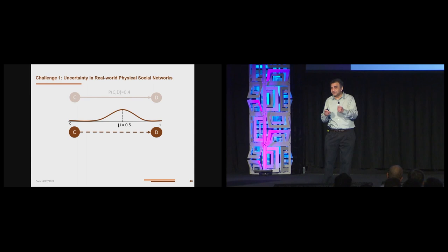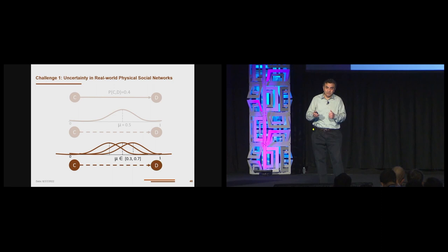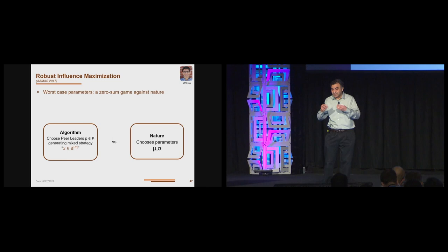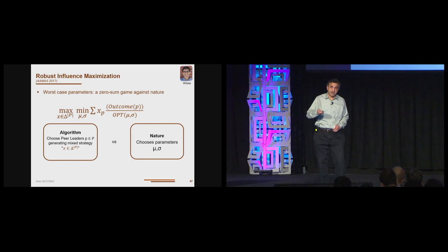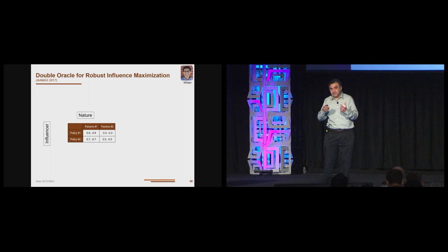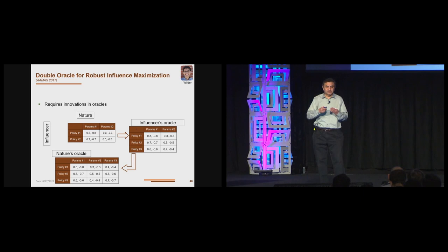What this means is we can appeal to a limited query budget. We can sample a few of the youth and get a small sample of the social network and work with that. So first, I said this probability of 0.4 may not be known. So we can say we sampled this from some distribution, but the mean of the distribution itself may not be known. So we can say this lies within some interval. Now, we again face this problem of robust influence maximization. We attack this problem again by casting it as a zero-sum game against nature, where the algorithm on the one side is trying to choose peer leaders, nature on the other side is trying to choose parameter settings to cause our algorithm to perform as worse as possible.